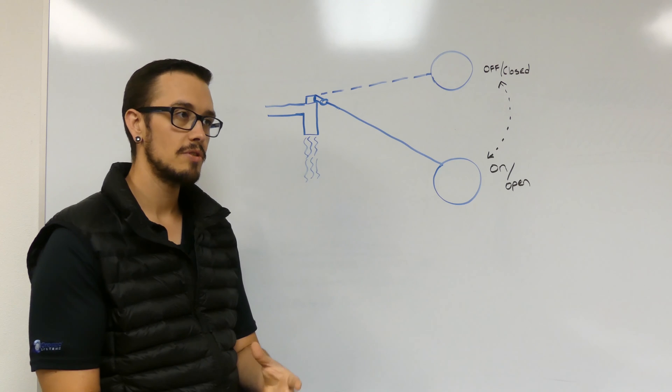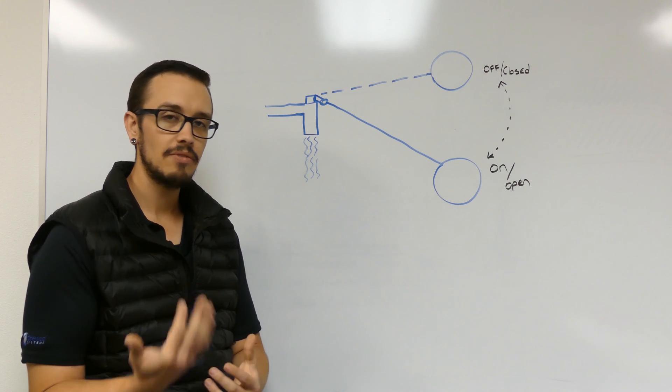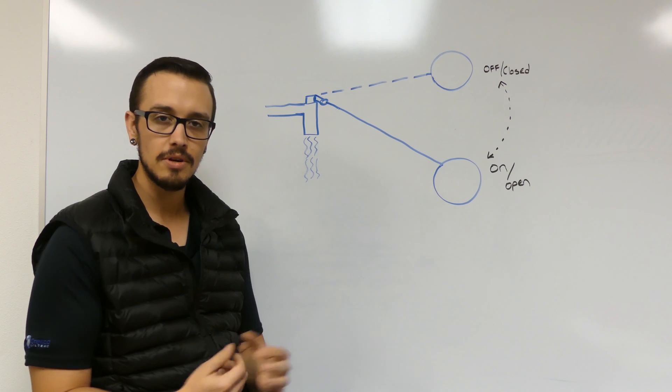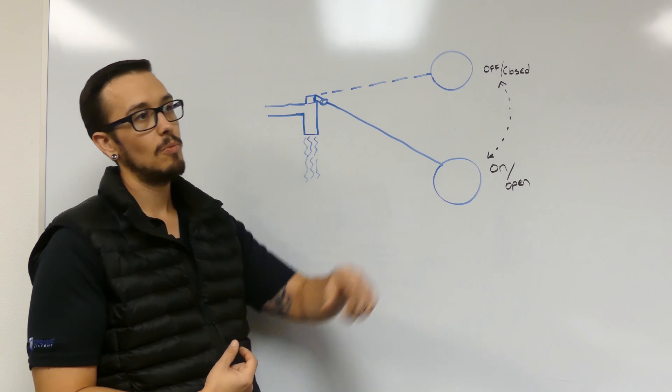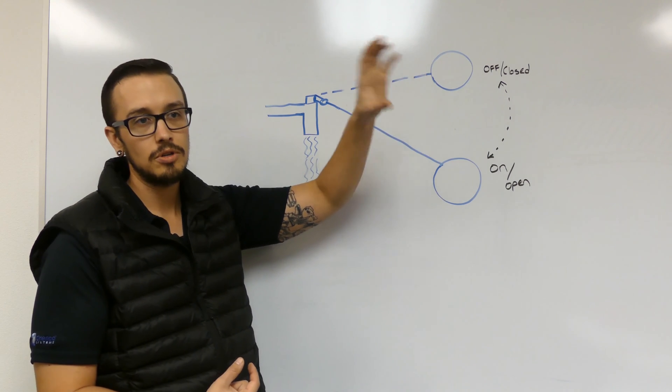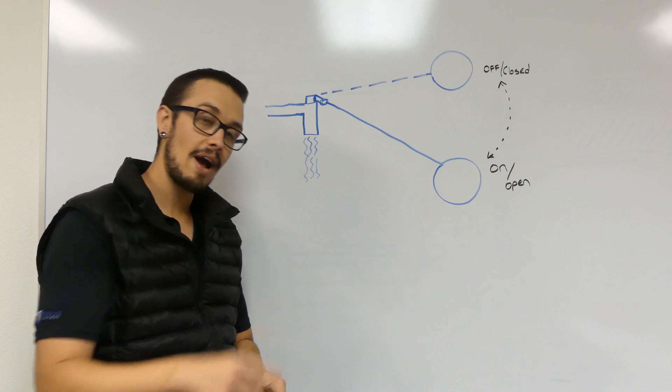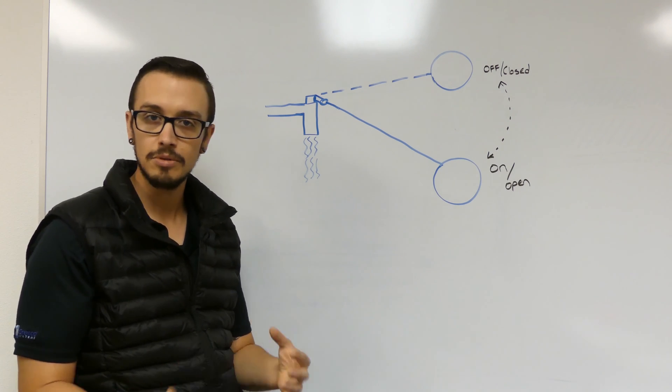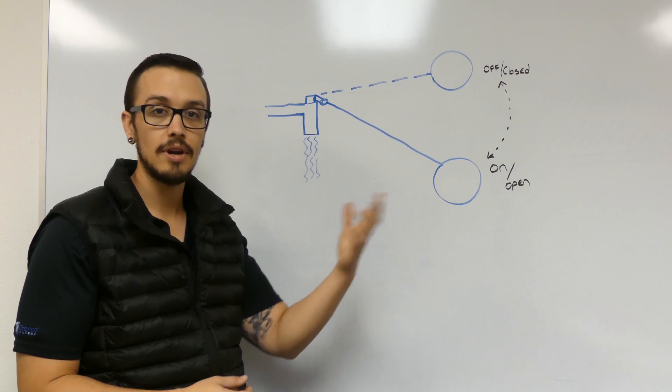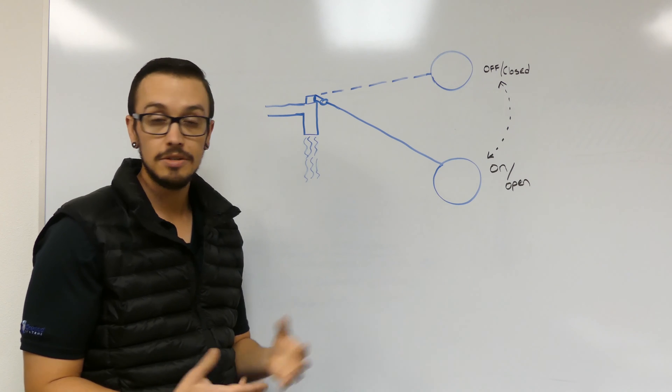One common application is when people have a low producing well or just want backup water. They'll pump water way up a hill, put a cistern up there—maybe a few hundred or a thousand feet away—and then gravity feed back down to pressurize the house. So if a power outage happens, they're still going to have water at pressure to run the things in their house. It's a great idea.